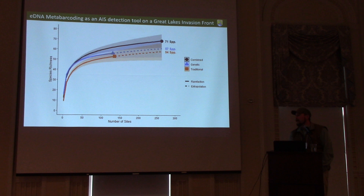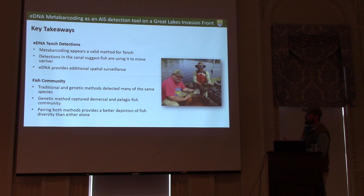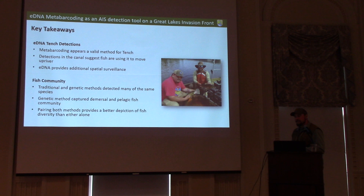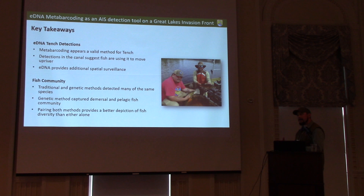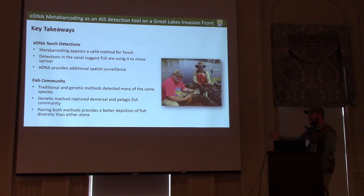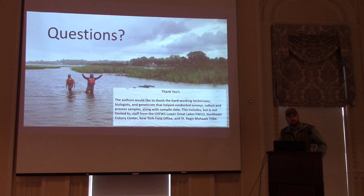There's a big advantage in using both methods in a complementary fashion. Key takeaways: we were able to detect tench using metabarcoding, which is excellent. The detections inside the canal were not expected, so we'll follow up on that. We were able to add spatial surveillance at pretty low time cost. On the fish community side, metabarcoding gives you not just a zero-or-one on your target species, but also great community data that other folks might be interested in. Traditional and genetic methods detected many of the same species with some uniqueness. Genetic methods spanned fish guilds a little better than traditional gear. If you're applying this for diversity or threatened and endangered species work, pairing both methods can give you a better depiction of fish diversity than either method alone.